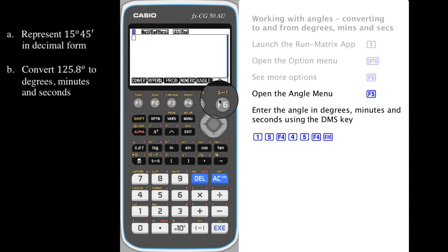Open the Option menu to see more options. Press F6 and open the Angle menu above F5.